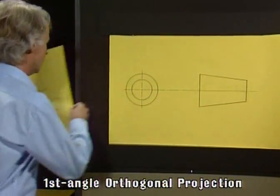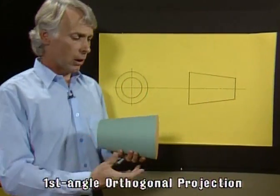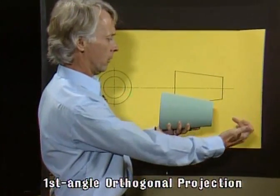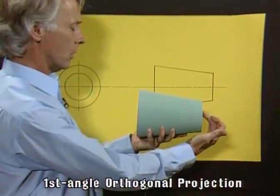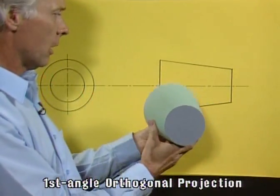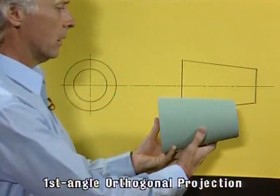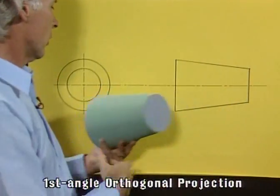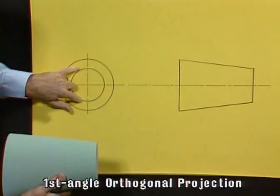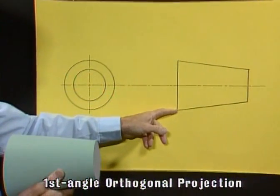The symbol for this is again based on the truncated cone, oriented that way around. If we look from the small diameter end, we get the two concentric circles, which are shown over here on the left-hand side. So a view from the right of that is shown over on the left-hand side. This means that the two concentric circles are going to be next to the larger diameter of the truncated cone.